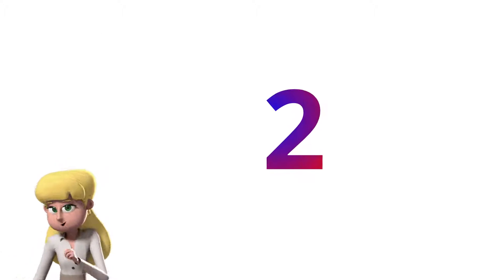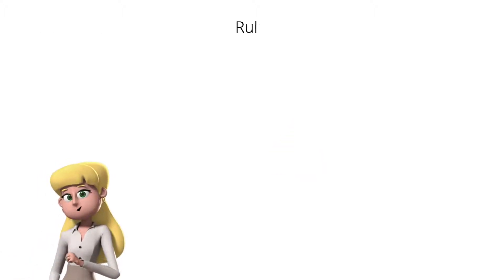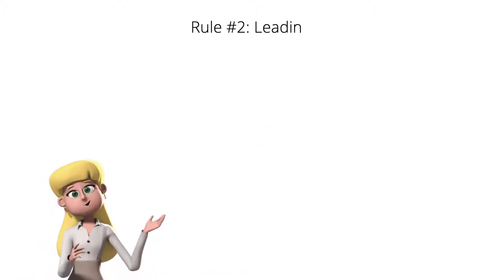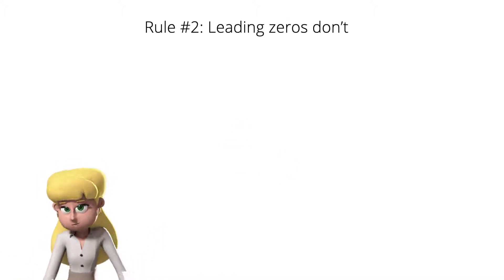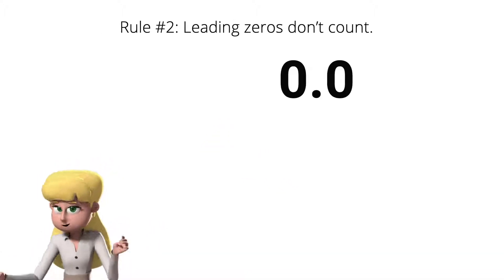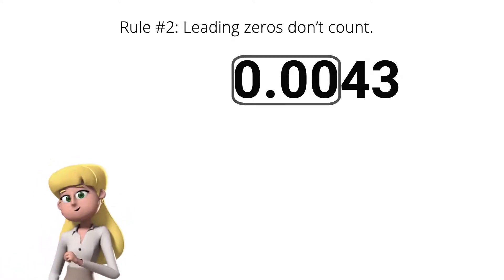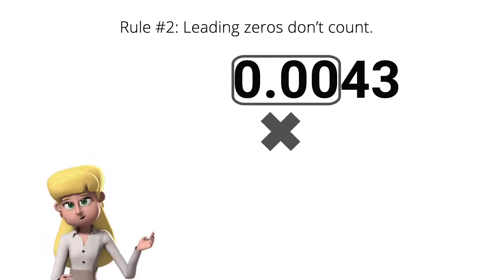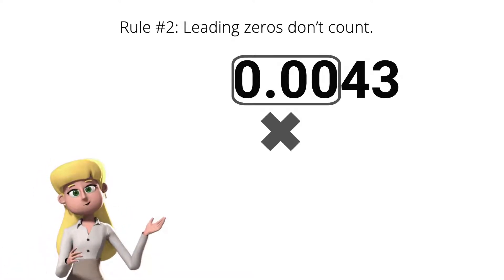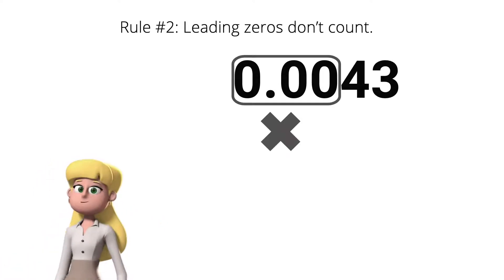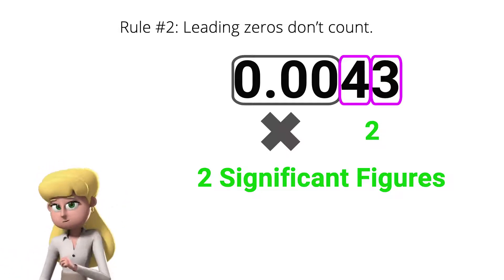Rule number 2: leading zeros don't count. If I have 0.0043, these zeros don't count, so it will only have 2 significant figures.